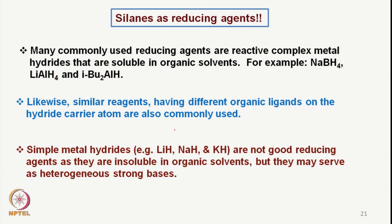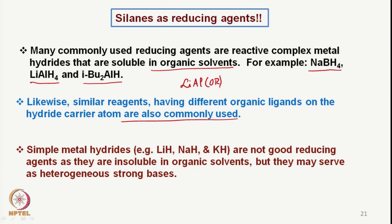Now we look at new reducing agents — basically silane-based reducing agents. As we can see, many commonly used reducing agents are reactive complex metal hydrides that are soluble in organic solvents, like sodium borohydride, lithium aluminum hydride, DIBAL, or similar reagents having different organic ligands on the hydride carrier atom. For example, in the case of lithium aluminum hydride, we can have OR groups and increase the bulk and hydrophobicity. These molecules are soluble or at least partially soluble in organic solvents and reductions can be carried out.